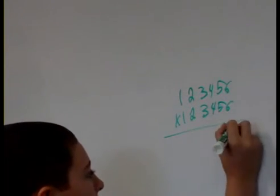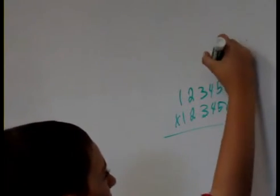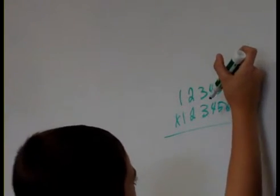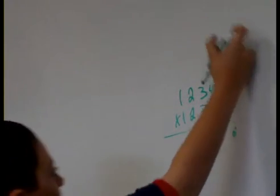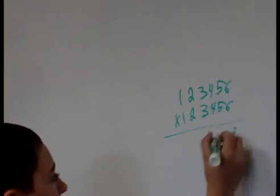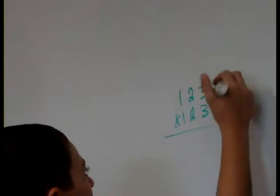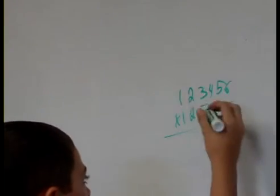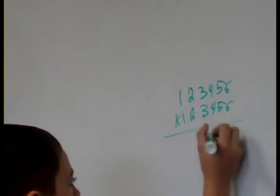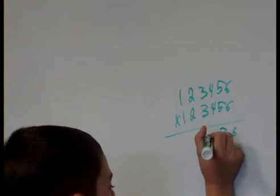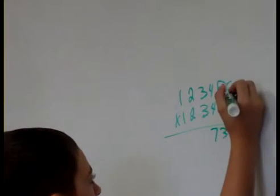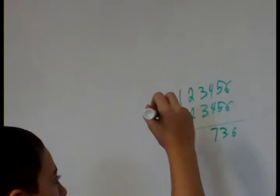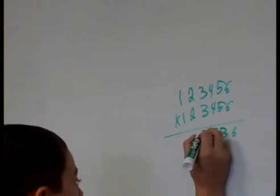And then, 6 times 6 is 36. And then, you put the 3 at the top. And then, 5 times 6 is 30, plus the 3 is 33. And then, 6 times 4 is 24, plus the 3, which is 27.